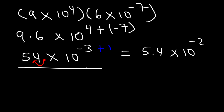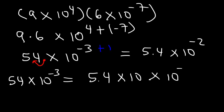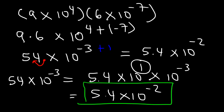For those of you who like to show the work, here's what you could do. Start with 54 times 10 to the negative 3. Realize that 5.4 times 10 is 54, and that 10 is 10 to the 1. So we need to add 1 plus negative 3, which is equal to negative 2. So the final answer is 5.4 times 10 to the negative 2.